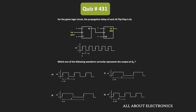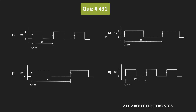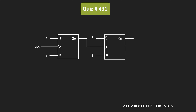In case you are not able to see the waveform, here is the enlarged version. This is the logic circuit given in the question. As you can see, both flip-flops are positive edge-triggered JK flip-flops, and the output of one flip-flop is connected to the clock input of the next flip-flop. Both J and K inputs are connected to logic one, meaning the flip-flops are used in toggle mode. This is essentially the circuit of a 2-bit down counter.